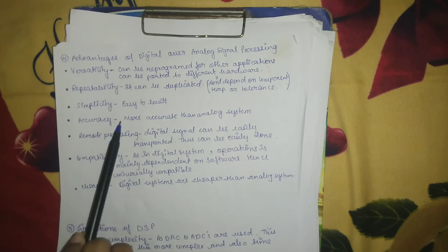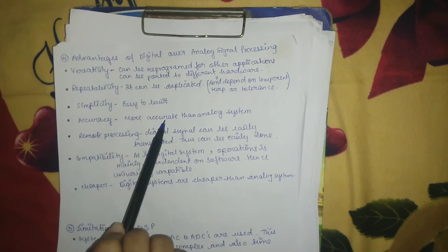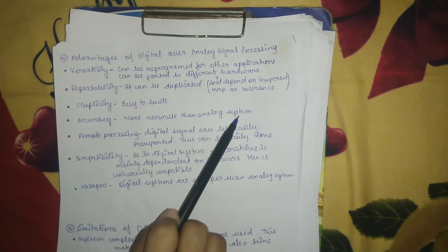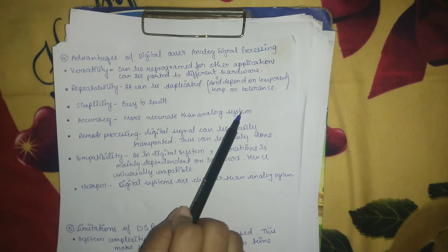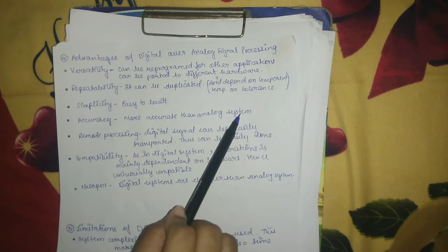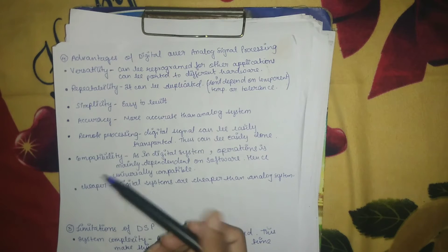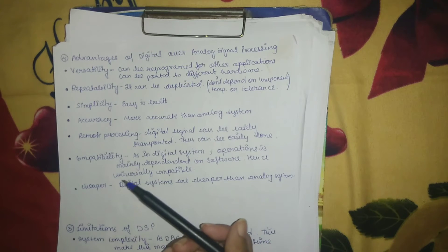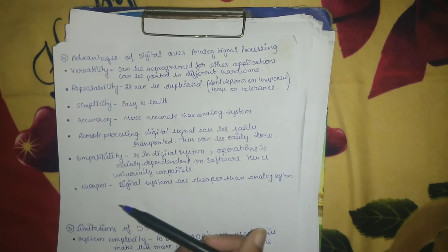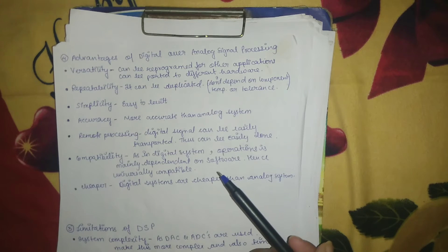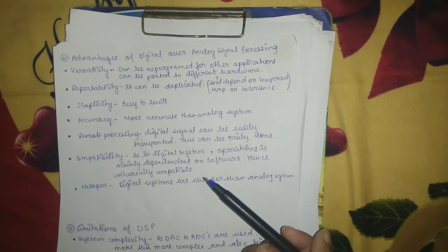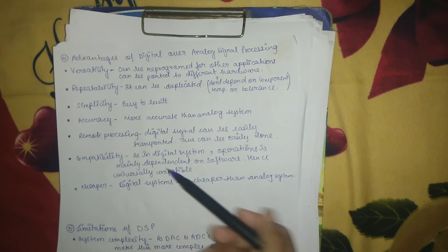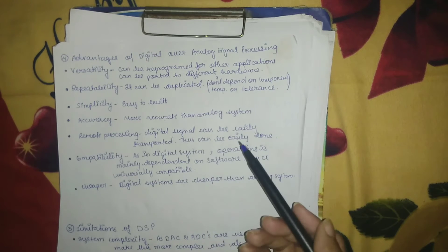Accuracy: digital signals can be more accurate than analog systems. To design an analog system, analog components like resistors, capacitors, and inductors are used, and the tolerance of these components reduces the accuracy of the analog system. Therefore, DSP is much more accurate.